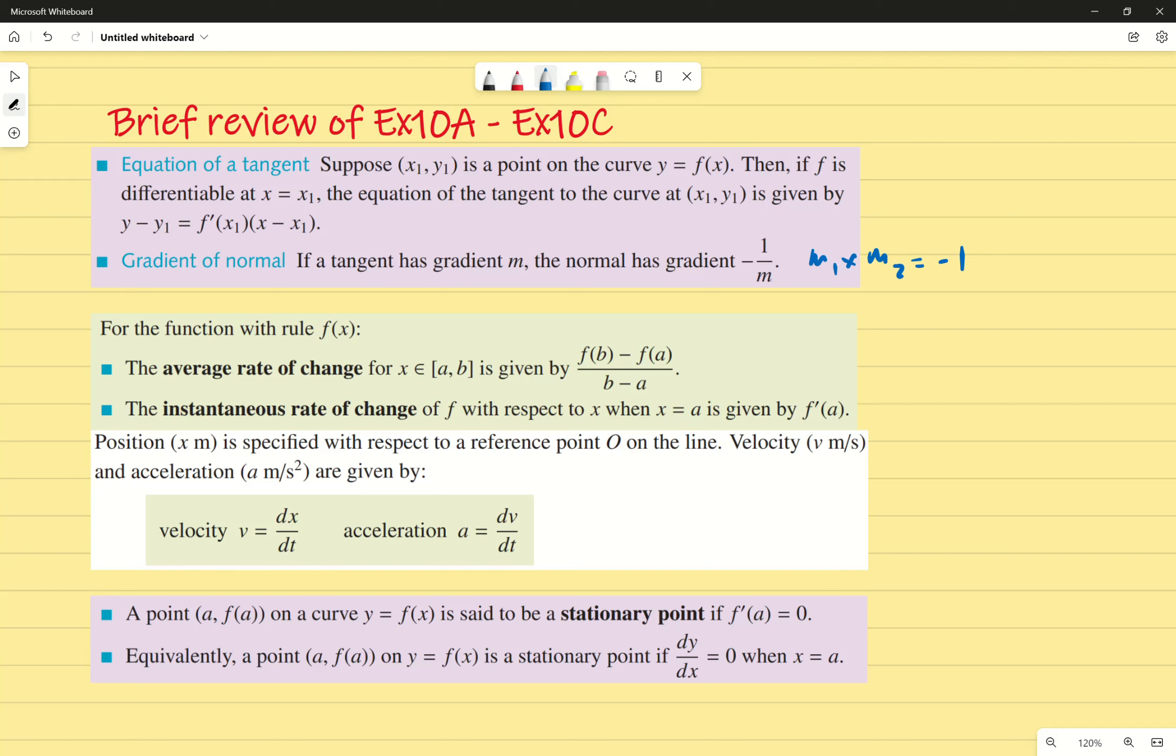For average rate of change and instantaneous rate of change, you need to know the difference. Technically speaking, average rate of change is exactly that—an average between two certain points in the graph. While it can be accurate, it's not always accurate. The instantaneous rate of change gives us the rate of change at a specific coordinate.